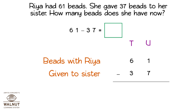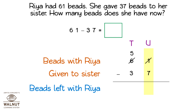Let us see how to do that. Let us break apart one ten and give it to the units. We change the values in the tens and units place. Now, we can subtract. We can subtract the units, and then we subtract the tens. That gives us the final answer. So, 61 minus 37 is equal to 24.